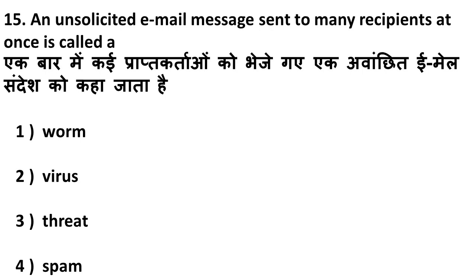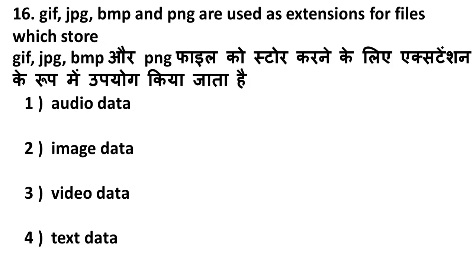Next question: an unsolicited email message sent to many recipients at once is called what? Unsolicited means not asked for — you don't want it but it is there. When we receive most of these unwanted messages, we call them spam. There is a separate spam folder in email. So the correct answer is spam.